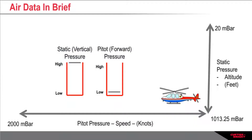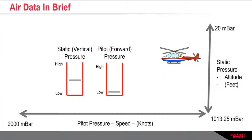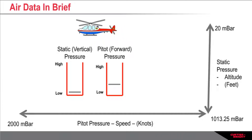As the aircraft sits on the ground, the static or vertical pressure is at its highest, as the atmosphere is denser at ground level. Also on the ground, the aircraft is not generating any forward pressure, so the pitot pressure is low. As the aircraft gains altitude, the static pressure reduces, and as the aircraft moves forward, the pitot pressure increases.